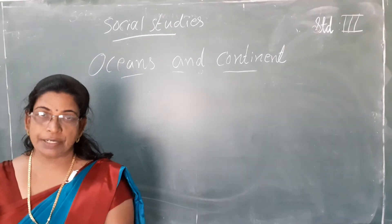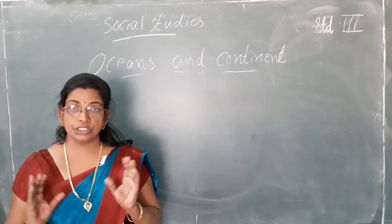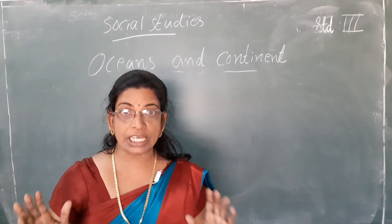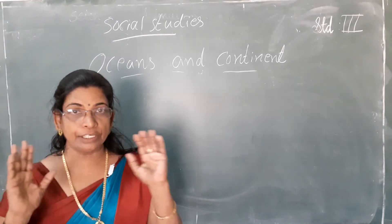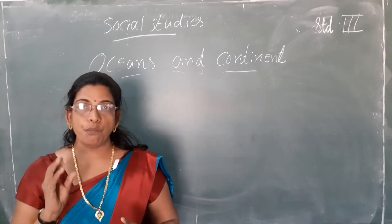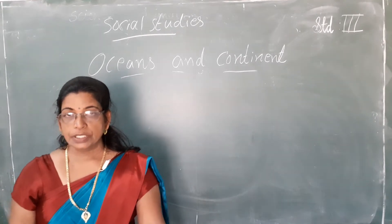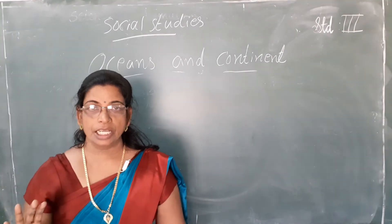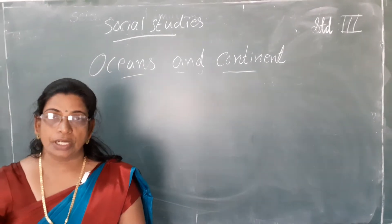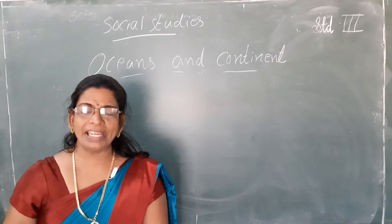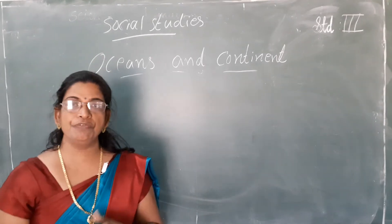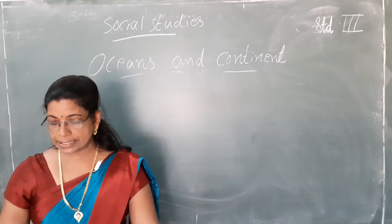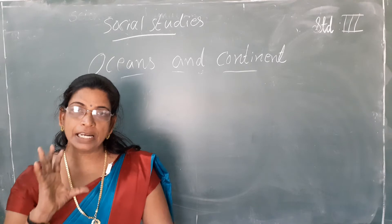First of all, we know the earth is very huge, so we cannot see the whole of it at one time. The earth is so big we cannot see the whole of it at one time, so we have to get some help. In order to see the earth, we have to take the help of a globe. You might have seen the globe — some students will have a globe at home. A globe is a model of the earth.